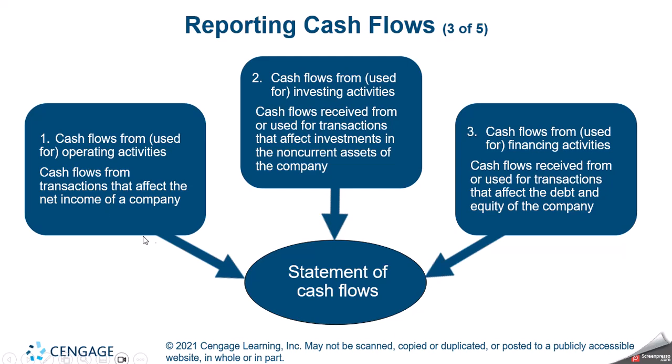The operating activities should be a positive number — this is what the company is in business to do. If they have a negative cash flow, they are not doing well on their day-to-day operations, which means nobody wants to invest in them. A company that's growing is going to have cash going out in investing activities. When you think investing, they're investing back into themselves — buying equipment, expanding into new geographic areas, making new products. So they're putting money back into themselves; that's what we call investing activities.